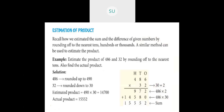Here they have asked us to estimate the product of 486 and 32 by rounding off to the nearest tens, and also find the actual product.